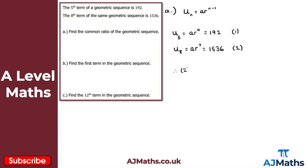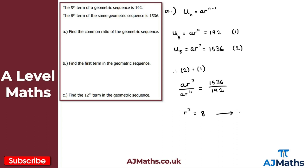Dividing equation two by equation one gives ar⁷ over ar⁴ = 1536 over 192. Simplifying the left-hand side using rules of indices gives r³. Calculating the right-hand side gives 8. So r³ = 8, and taking the cube root of both sides gives r = 2. The common ratio of this geometric sequence is 2.